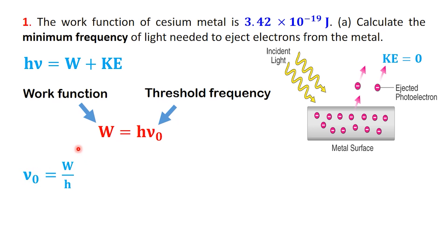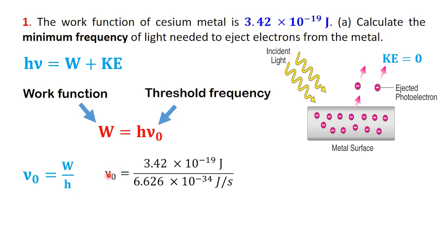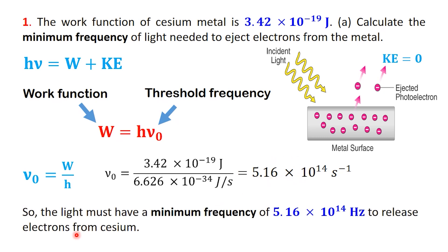Rearranging the equation gives nu 0 equals w over h. Now we can substitute the numbers: 3.42 times 10 to the power of minus 19 joules divided by 6.626 times 10 to the power of minus 34 joule seconds. Carrying out the calculation gives us 5.16 times 10 to the power of 14 per second. So the light must have a minimum frequency of about 5.16 times 10 to the power of 14 hertz in order to release electrons from cesium.